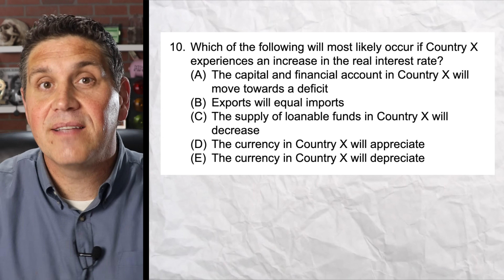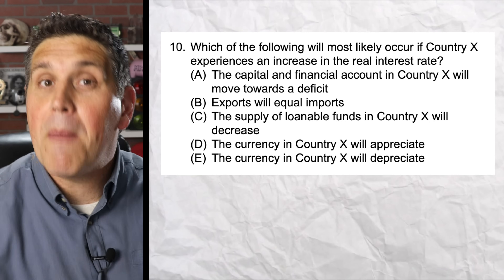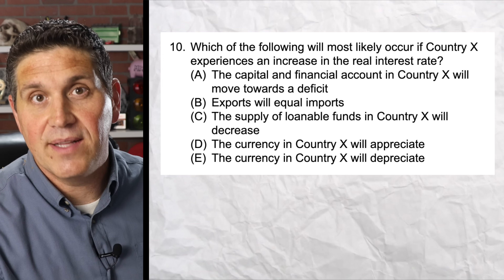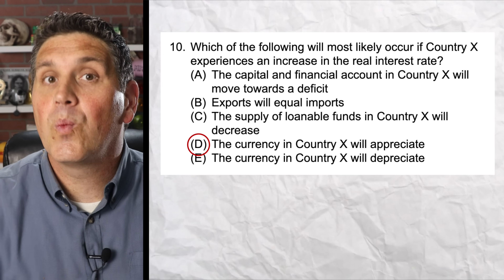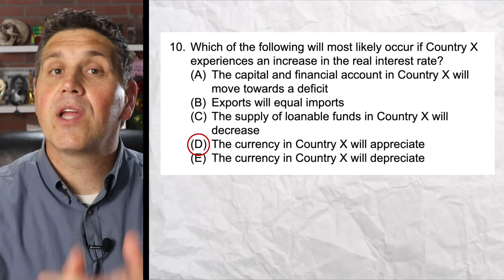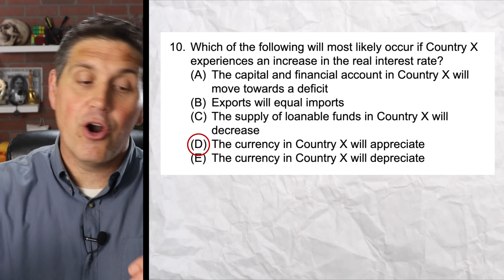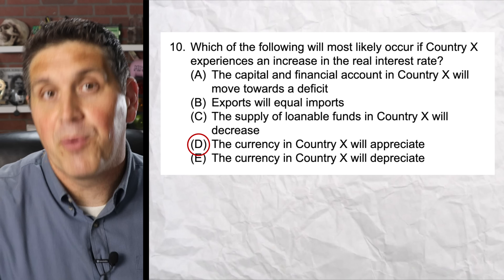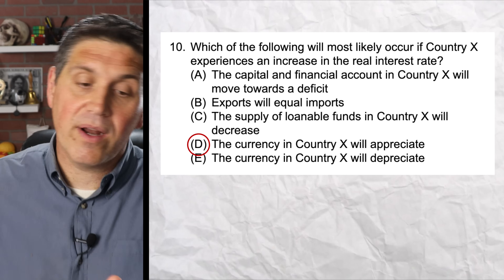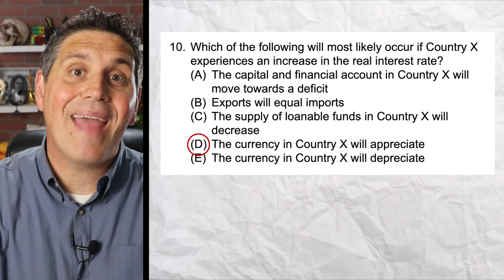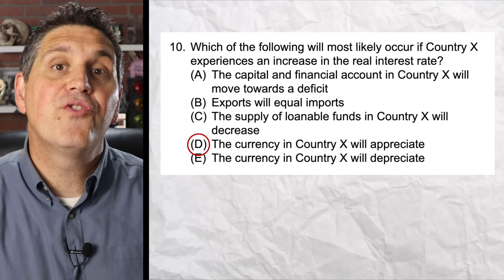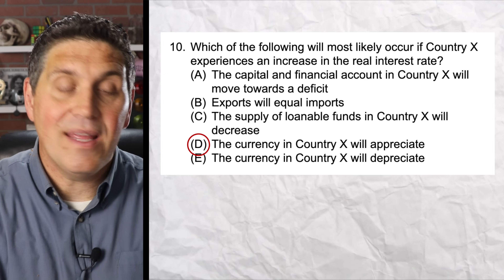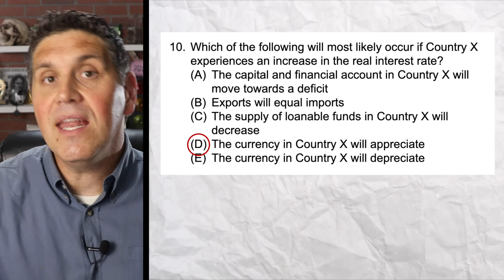Question ten is from unit six and covers shifters of foreign exchange. Remember there are four: tastes and preferences, income, price level, and changes in interest rates. The answer is D — the currency for Country X will appreciate. When the real interest rate in one country goes up, people in other countries want to buy that country's bonds to earn a higher rate of return, so demand for Country X's currency increases and it appreciates. Regarding balance of payments, when other countries buy your bonds, that's part of the capital and financial account and moves it toward a surplus, not a deficit — that's why answer A is wrong. The supply of loanable funds in Country X is going to increase, not decrease, which is why answer C is also wrong.